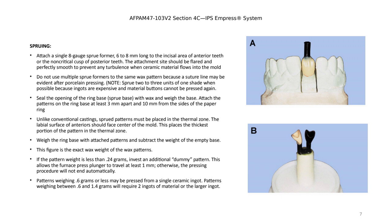When doing the sprue ring for pressable, the ring setup differs from porcelain fused to metal. For PFM, we insert a button of wax into the base ring and then attach the sprue wax pattern. For pressable ceramics, we don't use base wax — the ring has a small hole on top that must be covered with a thin layer of wax, and then the sprue patterns are attached to the ring.